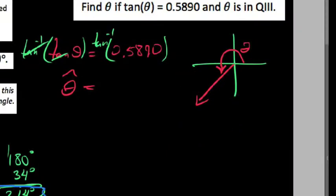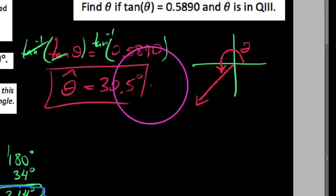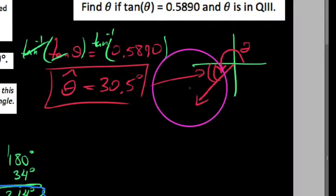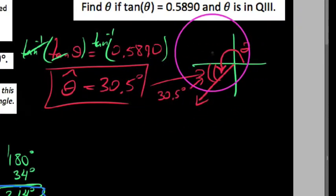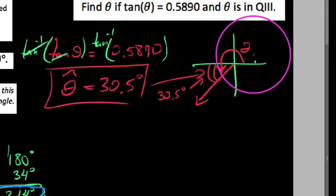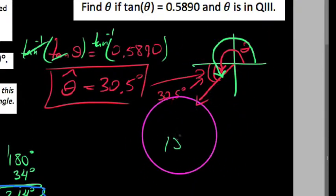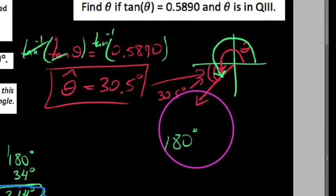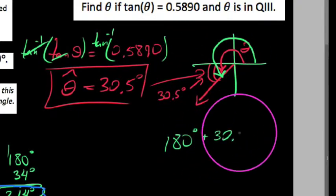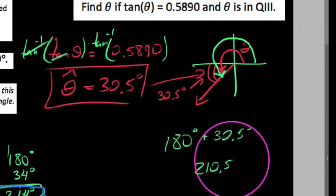So we say, all right, well, if I know that this is about a 30.5-ish degree angle, this is my theta prime, theta party at it. This is my reference angle. If I know just this part right here is about 30.5-ish degrees, then the entire angle, the entire one to begin with, this one right here, all the way over, would have been 180 in this instance to get over to the third quadrant in the first place, 180 degrees plus the extra 30.5. And so we get about a 210.5 degree angle.